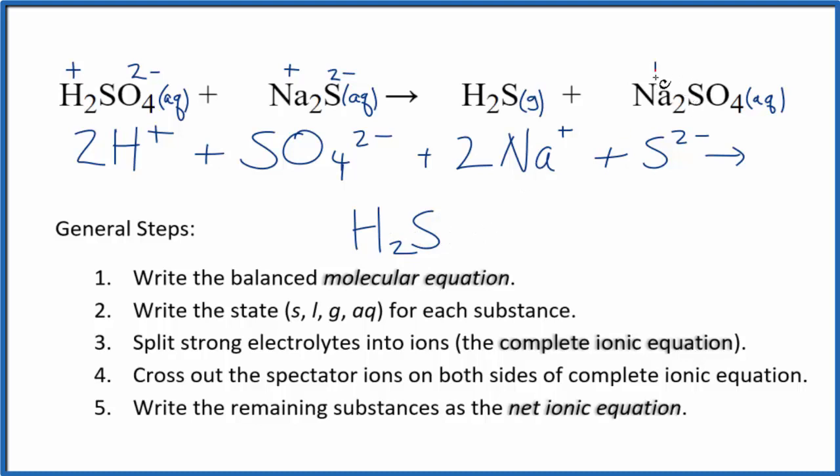Again, sodium, 1+, the whole sulfate ion, 2-. So we have two sodium ions, just like in the reactants, plus our sulfate ion, SO4, 2-. So this is the complete ionic equation.